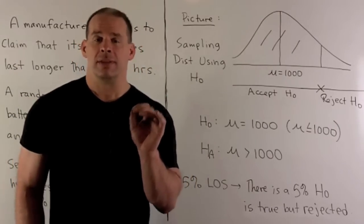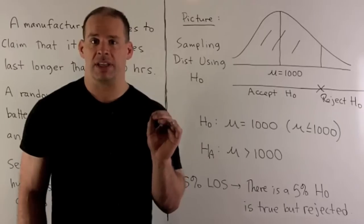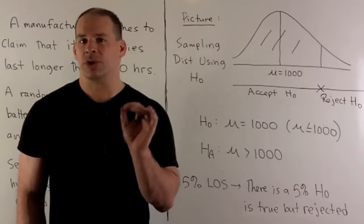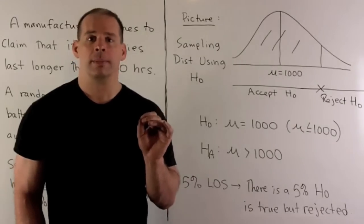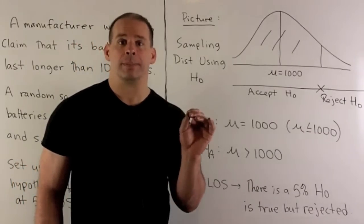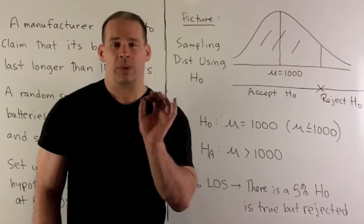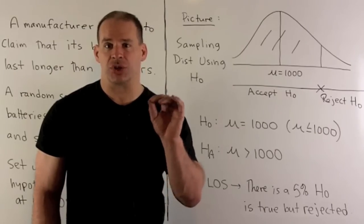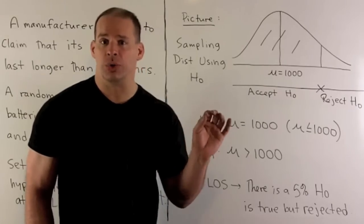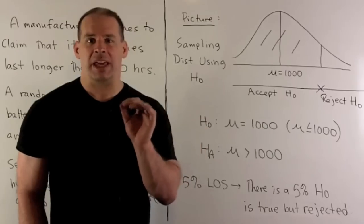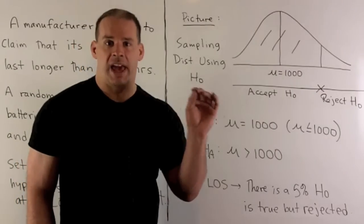One other thing to point out: the 5% level of significance. That's going to mean there's a 5% chance for a type 1 error. A type 1 error is just a case where we have the null hypothesis is actually true, but our conclusion is to reject it. So that's going to be the chance of a false negative.